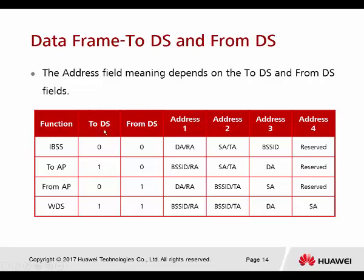When To DS is 1 and From DS is 0, the frame is being sent to the uplink — meaning an STA wants to forward a frame to the AP. Address 1 is the BSS ID showing which AP you're connected to, address 2 is the source address showing which STA sent it, and address 3 is the destination MAC address because the AP will act as a gateway to forward to the destination.